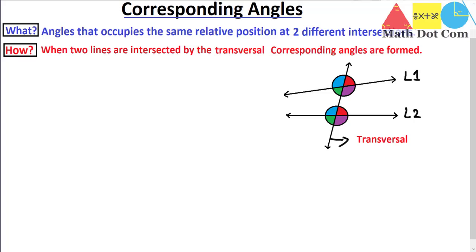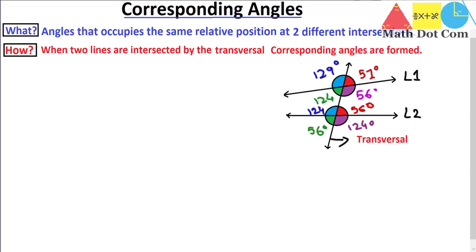If I write the angles for line L1 with the transversal: this angle is 51 degrees, the blue portion is 129 degrees, the green portion is 124 degrees, and the purple portion is 56 degrees. Then for line L2 with the transversal: the red portion is 56 degrees, the next angle is 124 degrees, the green portion is 56 degrees, and the purple portion is 124 degrees.